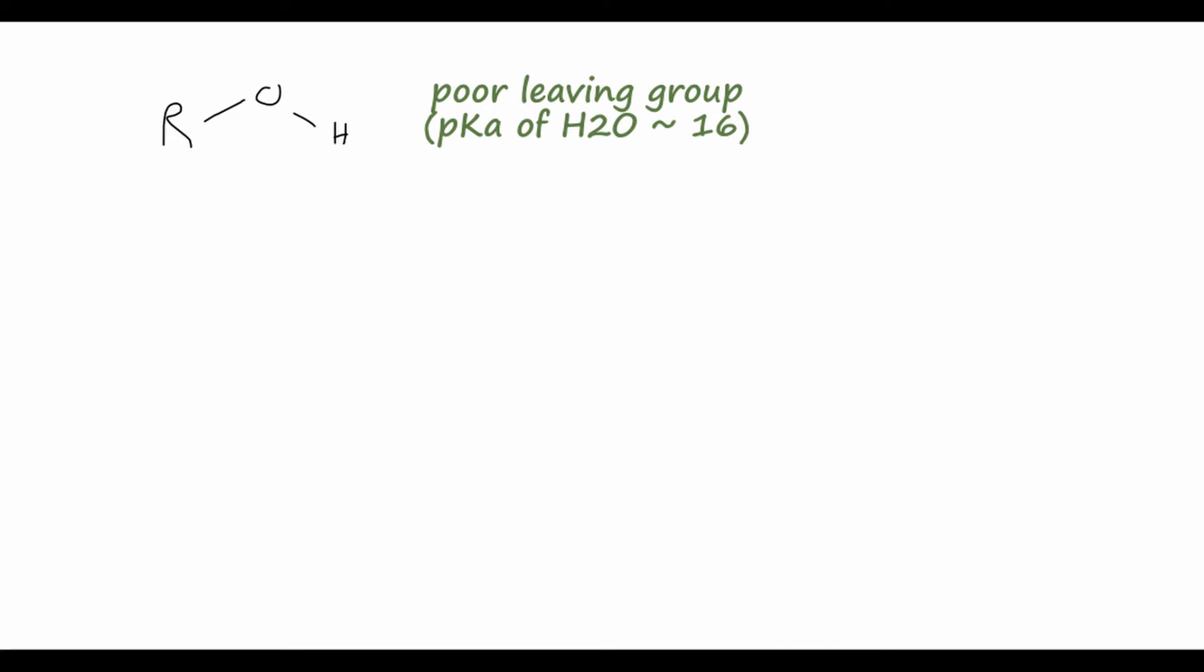However, if we find some way to protonate this alcohol, so we'll end up with R and then OH2 with oxygen with a plus charge, this will actually be a pretty good leaving group, because the pKa of H3O+ is about -2. So water, which would be our leaving group, would be a weak base and therefore a good leaving group, about the same ability as chlorine or bromine.